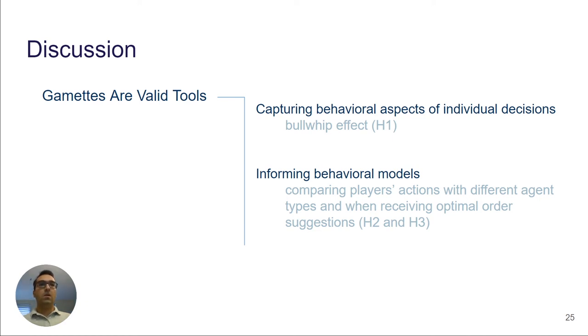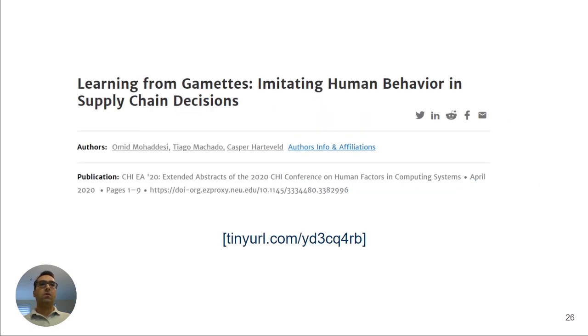In this study, we didn't look at how to inform simulation agents in practice using the collected data, but we looked at this in our CHI 2020 late-breaking work paper, which is accessible in the ACM Digital Library. In this late-breaking work paper, we show how to practically use the collected data from the gamettes to imitate human behavior and inform agent-based models. You can also find this paper by following this link.